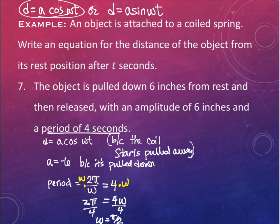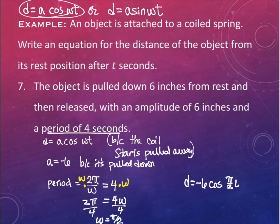The problem asks us to write an equation for the distance. So the final answer is: d = -6·cos(π/2 · t). This equation relates all the details together.